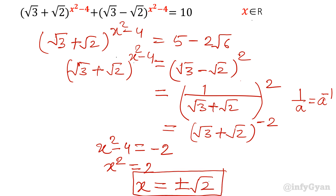So overall there are four solutions: two solutions are x = ±√6 and two solutions are x = ±√2. Thank you so much for watching — please do subscribe.